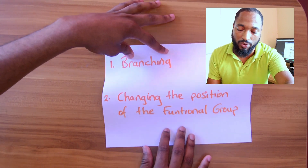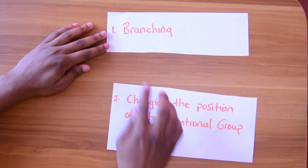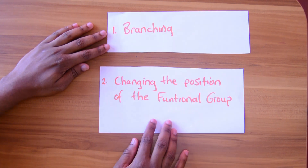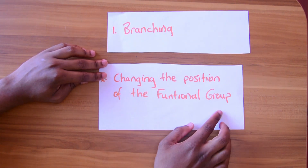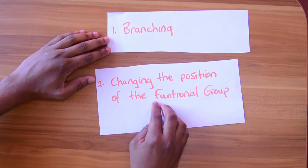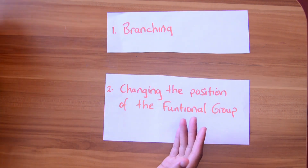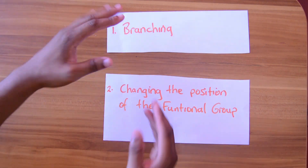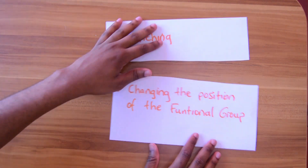Structural isomerism comes about in two different ways. The first way is branching. The second way is changing the position of the functional group. Let's go through some concepts for both — what branching means and what changing the functional group position means.